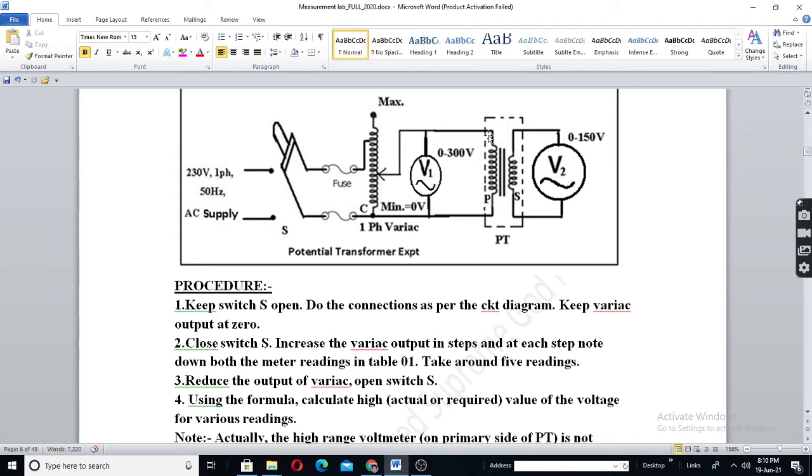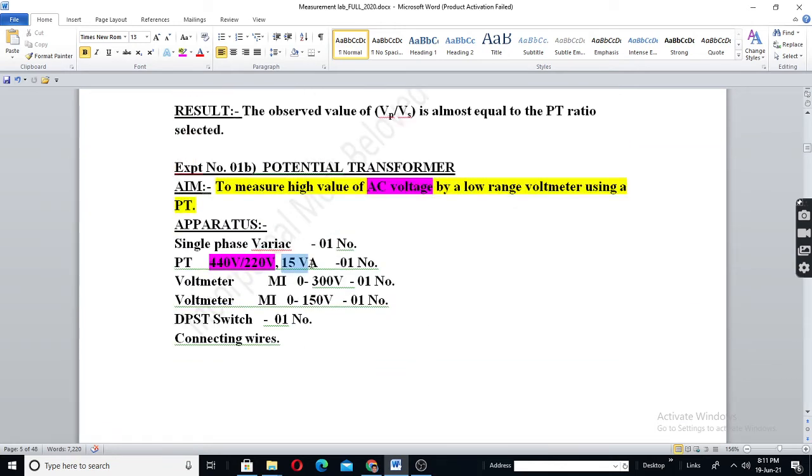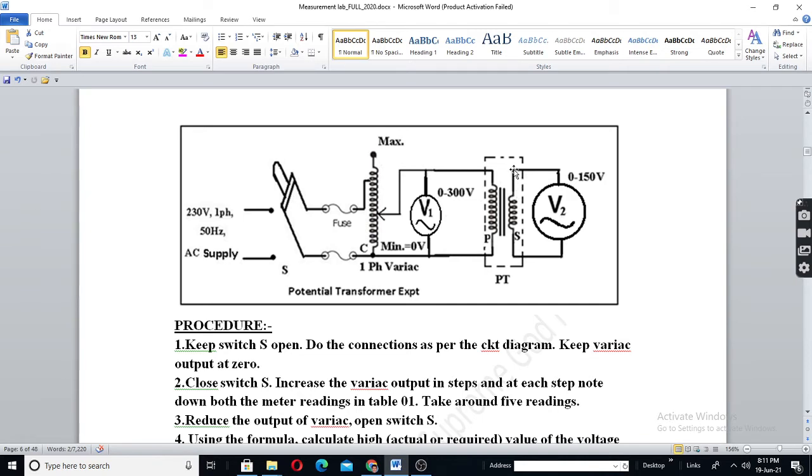See, PT is a normal potential transformer, a normal transformer. But it cannot deliver load. You cannot connect load in the secondary. Hence, its VA will be less. You can see here, only 15 VA. So, the current in the wires or the coils will be very much less. Practically, theoretically it should be zero. But practically there will be magnetizing current. Hence, there will be some current.